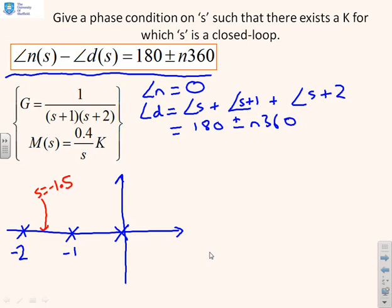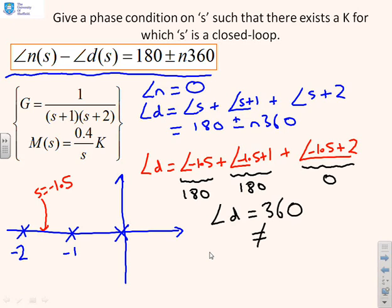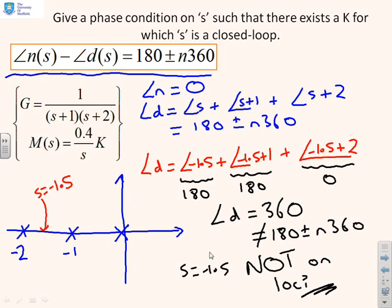I'm going to conjecture that I've got some value of s just here, s equals minus 1.5. Is that s a closed loop pole? I'm going to simply plug that value of s into my formula. The argument of d equals the argument of minus 1.5 plus the argument of minus 1.5 plus 1 plus the argument of minus 1.5 plus 2. The argument of minus 1.5 is 180. The argument of minus 1.5 plus 1 is 180. The argument of minus 1.5 plus 2 is 0. So the total argument of d is 360. This is not equal to 180 plus or minus n360, so s equals minus 1.5 is not on the loci.